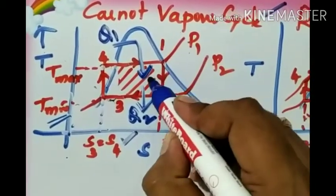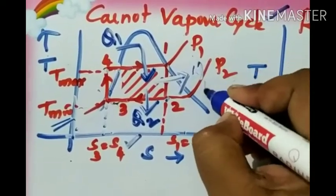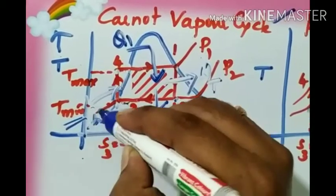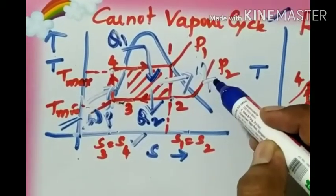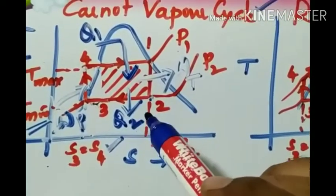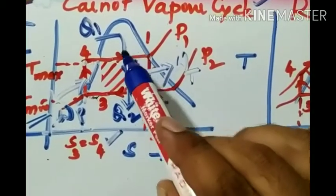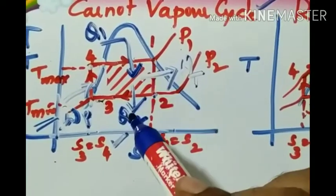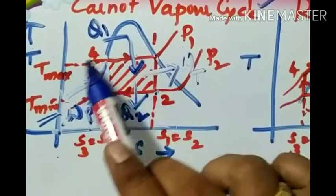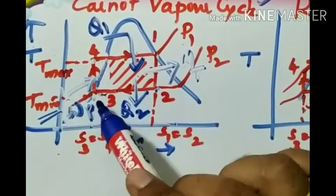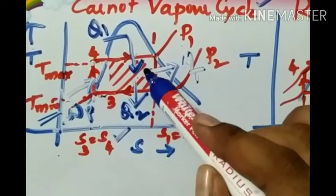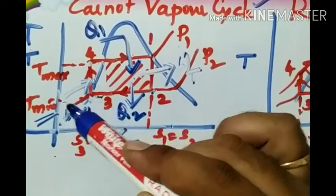Thereby, positive work output is obtained as turbine work output, and compression work — the pump work — is supplied, taken from the turbine work. The key point to remember in the Carnot cycle is that all four processes are reversible, and the heat addition and heat rejection both occur at constant temperature — that is why they are called isothermal processes. Process 4 to 1 is isothermal heat addition, 2 to 3 is isothermal heat rejection, 1 to 2 is adiabatic reversible expansion, and 3 to 4 is adiabatic reversible compression.